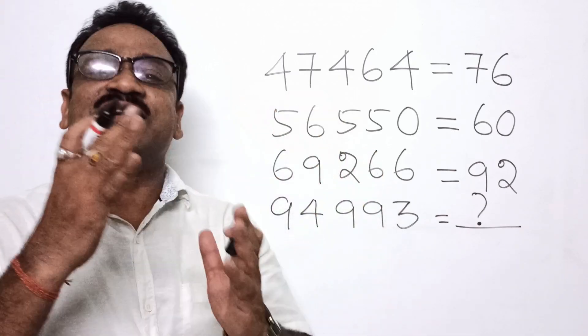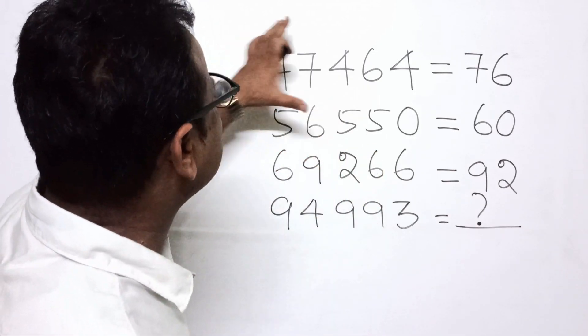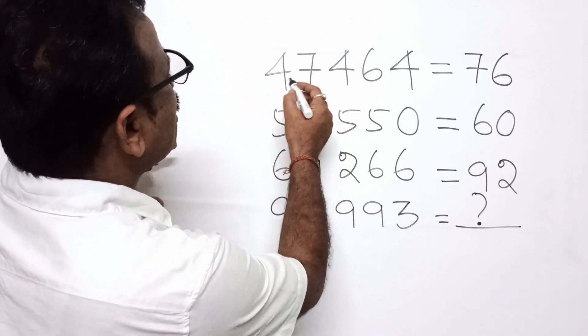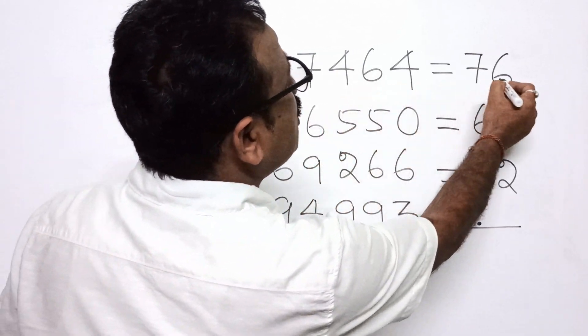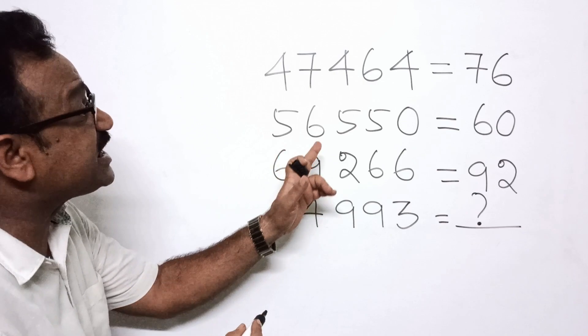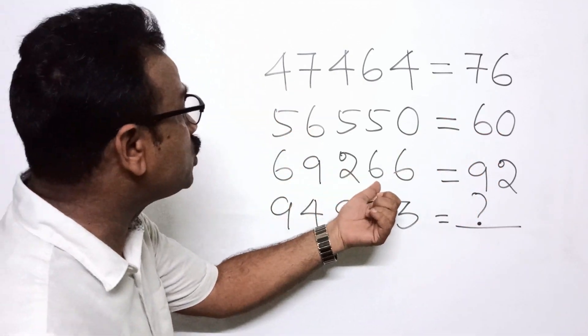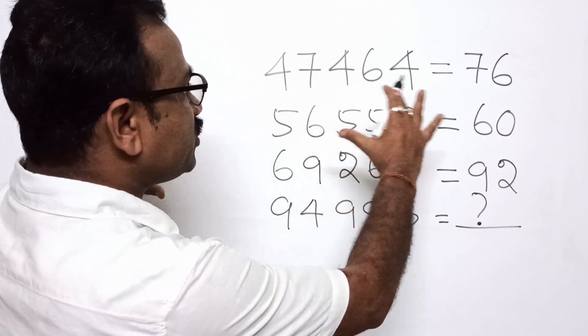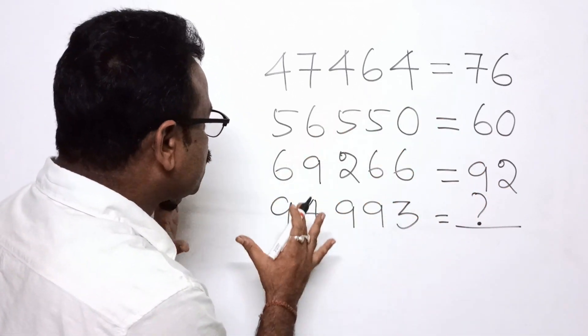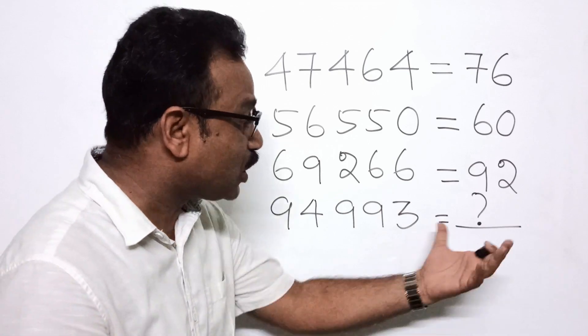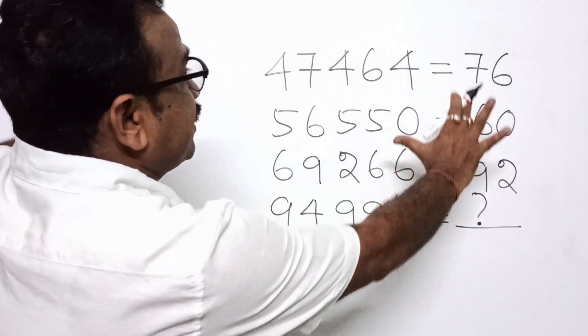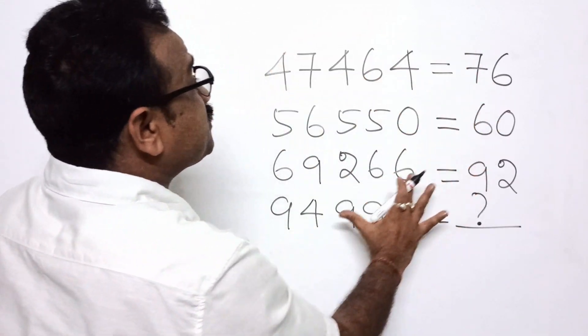So the exact question was displayed on the screen. So now see what is given. 47464 is equal to 76, 56550 is equal to 60, 69266 is equal to 92. Then we have to find out 94993 is equal to what? So see the pattern. What has happened in this puzzle?